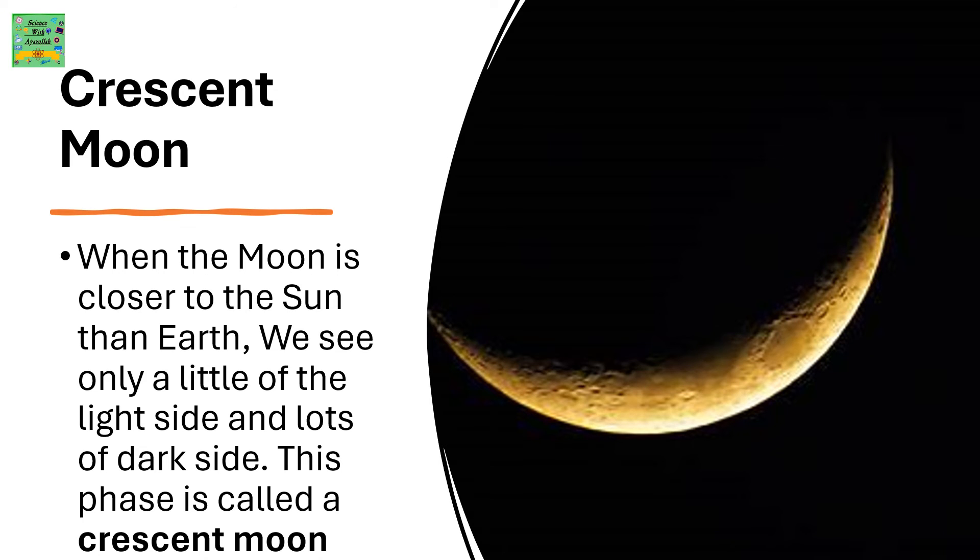Crescent Moon. When the moon is closer to the sun than Earth, we see only a little of the light side and lots of dark side. This phase is called a crescent moon.